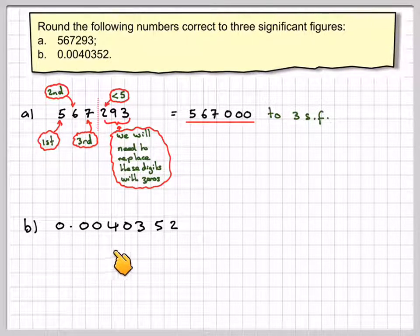B, 0.0040352. Now when dealing with decimals, whether there's a zero in the front here and some zeros at the front here, it's important to realize that these three zeros here are not significant. The first significant figure of this is a 4.